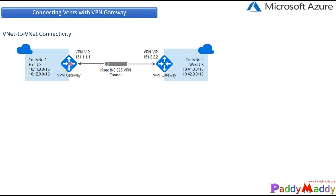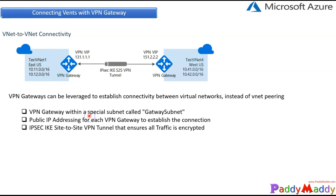A VPN Gateway is a software appliance device which will be provisioned within the Microsoft Azure portal. This might take around 45 minutes to reach a fully functional state. When you enable a VPN Gateway, it also needs a specific gateway subnet — a special subnet that must be created before you enable the VPN Gateway.